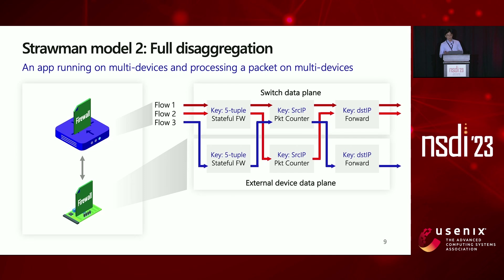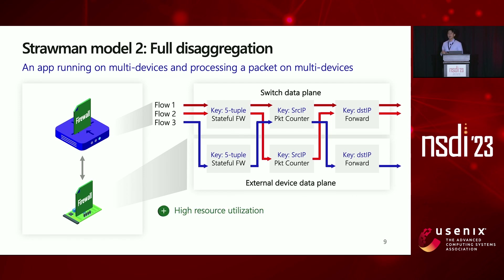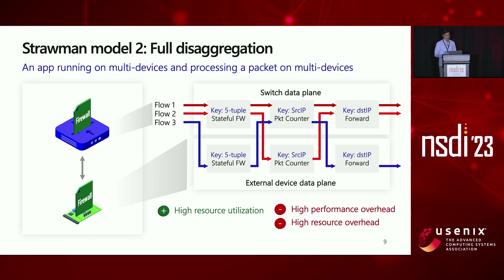The second model is full desegregation, where both an app and packets can run on multiple devices. Unlike app-pinning, it can achieve higher resource utilization with higher flexibility, but it can cause high performance and resource overhead due to frequent inter-device routing, like Flow 2 and 3 in this example.